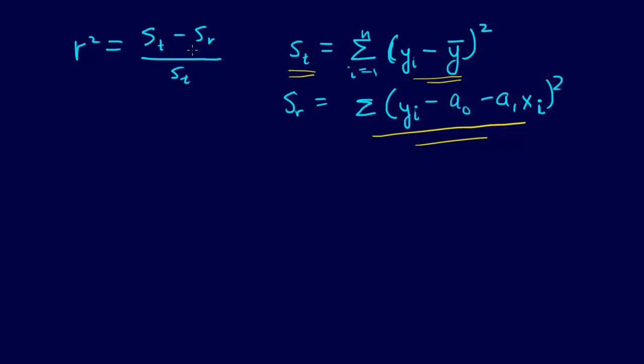So this difference is an improvement, and then you just normalize that by ST. That's the quick comment on R squared. You're looking at the improvement over just fitting a constant as opposed to a straight line.